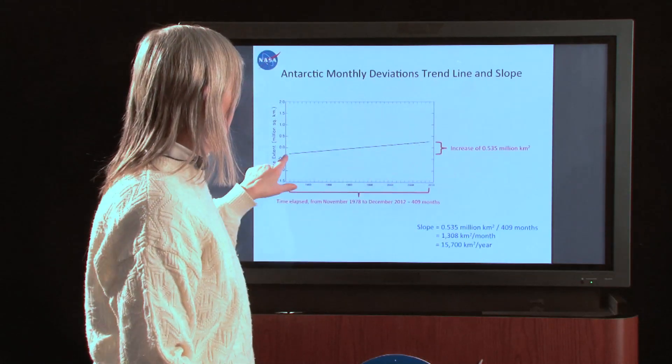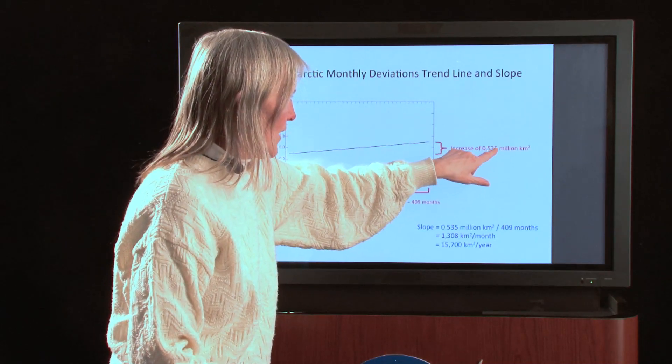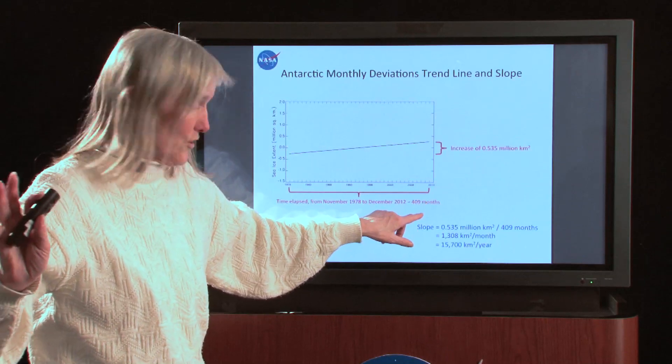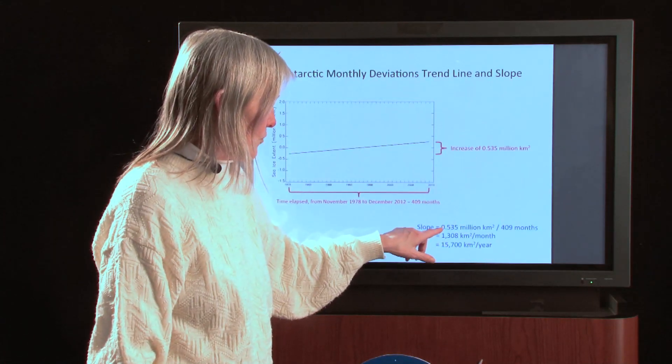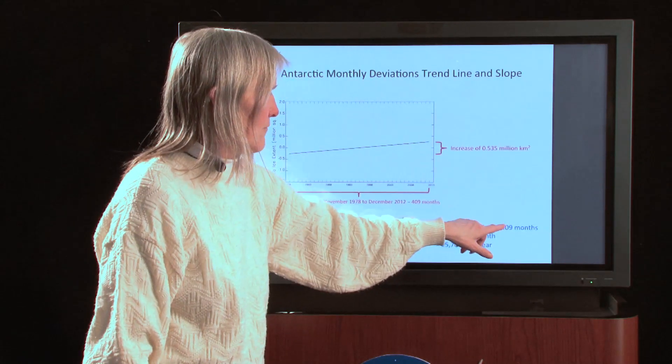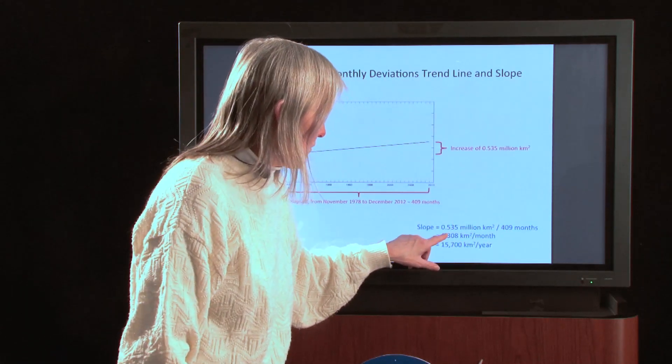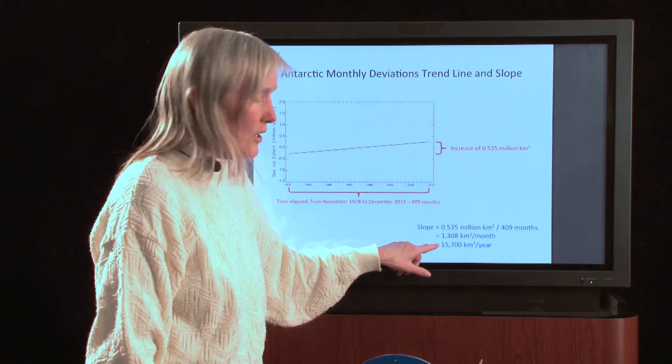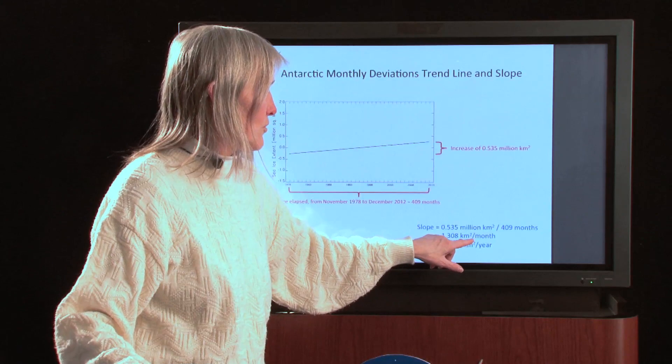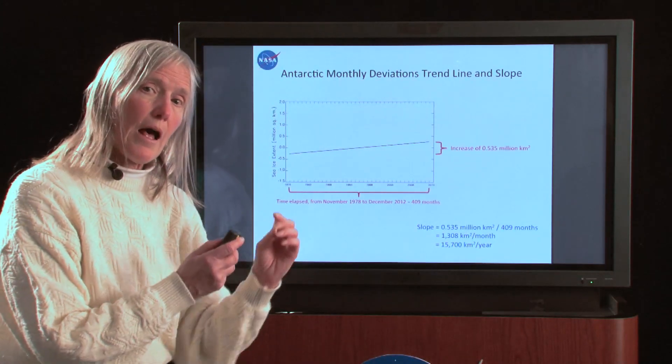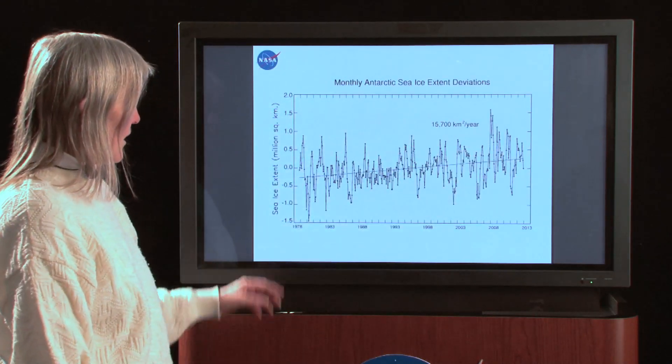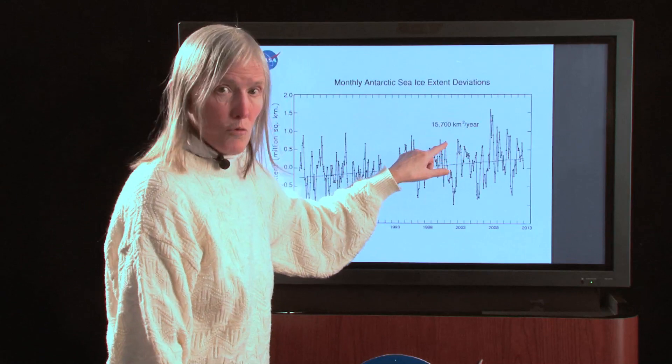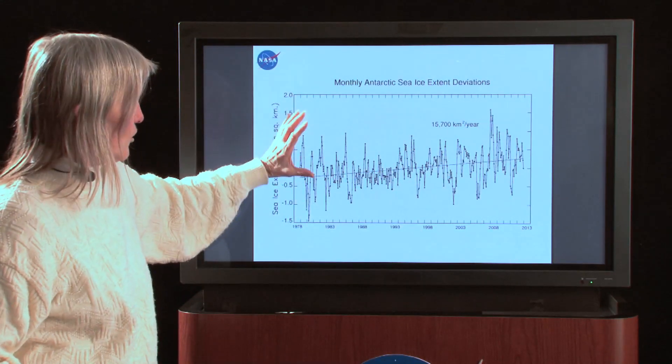Once we've got that line, and this line is from the previous slide, now we can calculate that the increase was 0.525 million square kilometers over a time frame of 409 months, the same time frame as for the Arctic since we're using the same data set source. We divide the 0.535 by the 409 months, and we get 1,308 square kilometers increase for every month. And multiply by 12 to get 15,700 square kilometers per year increase. And then, that allows us to put that number on our plot, which now has all our data points. It has the linear least squares line, and it's got the slope of that line.